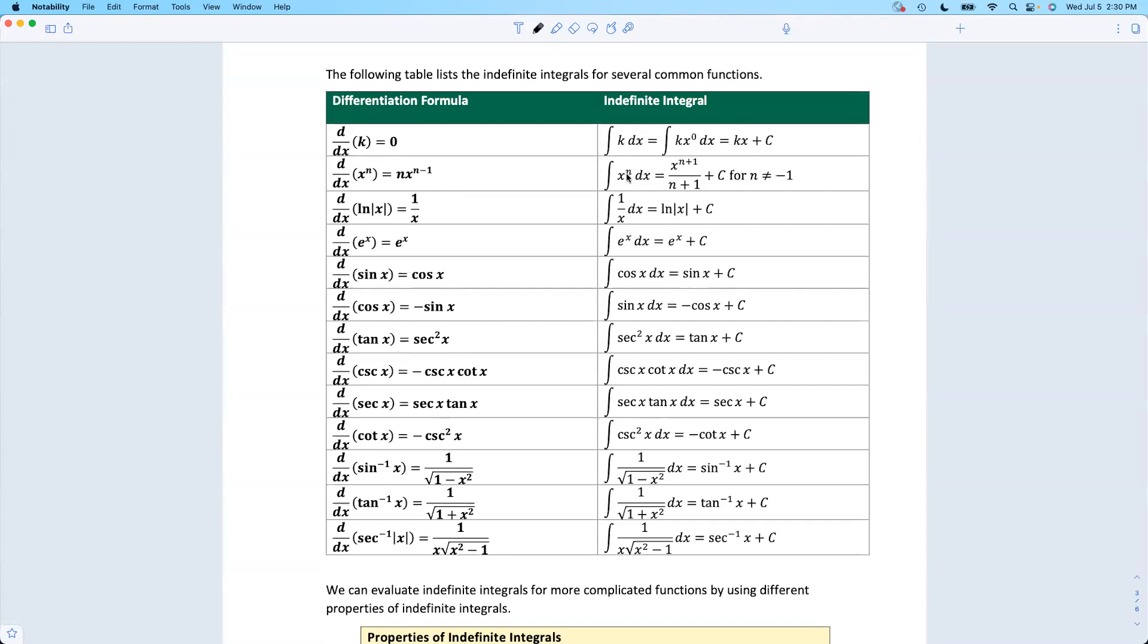When we're taking the antiderivative of x to some power, we raise up the exponent and divide by the new exponent. And of course, all the way down, see, we've got a plus c on all of our antiderivatives.